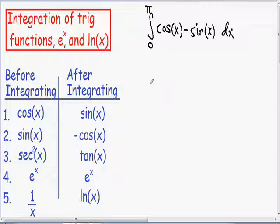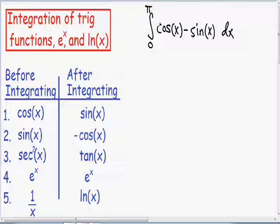Now I want to go over a definite integral example containing trig functions. Here we have the integral with a lower limit of 0 and an upper limit of pi of the cosine of x minus the sine of x dx. Before we integrate this problem, I want you to take a look at this table that I wrote for you on the left.